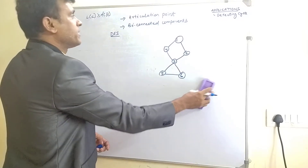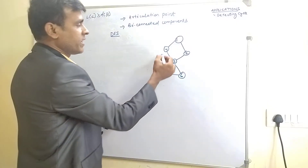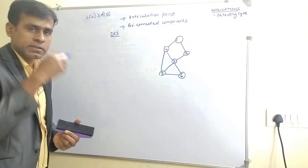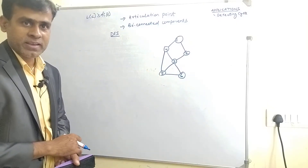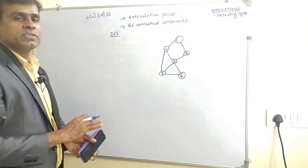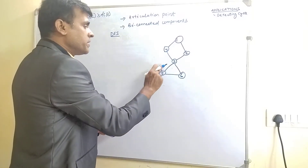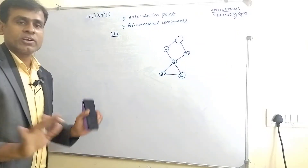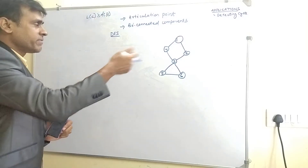To detect the articulation point of a biconnected component, suppose we have a graph. If we connect this edge, there is no articulation point — this is called a biconnected graph. In a biconnected graph there is no articulation point. In a connected graph, if an articulation point exists, then it is not called a biconnected graph.